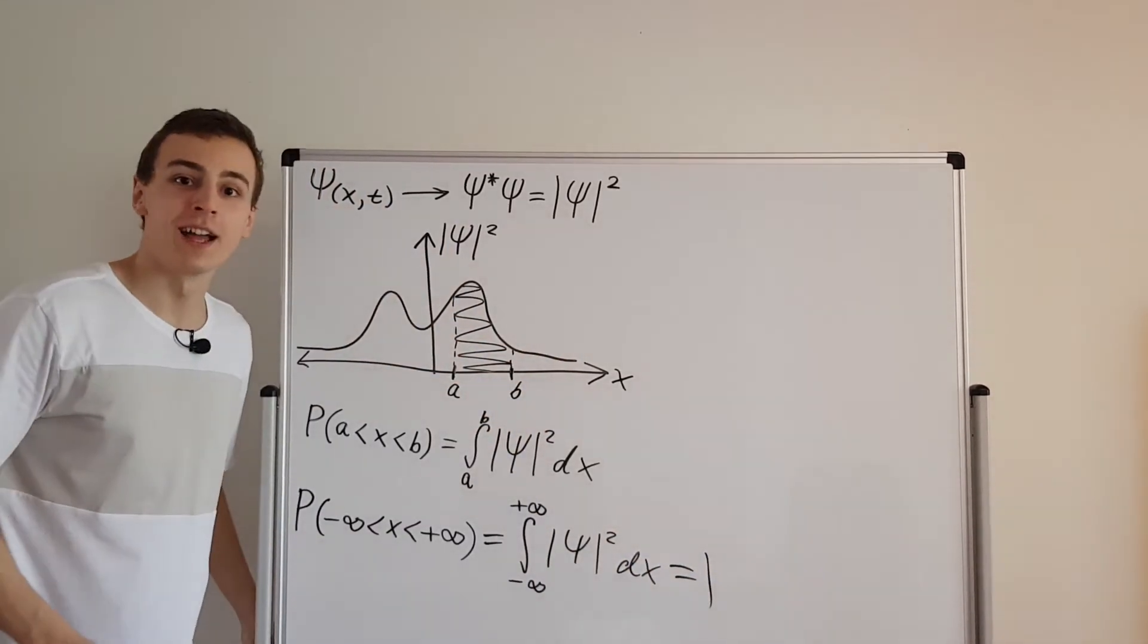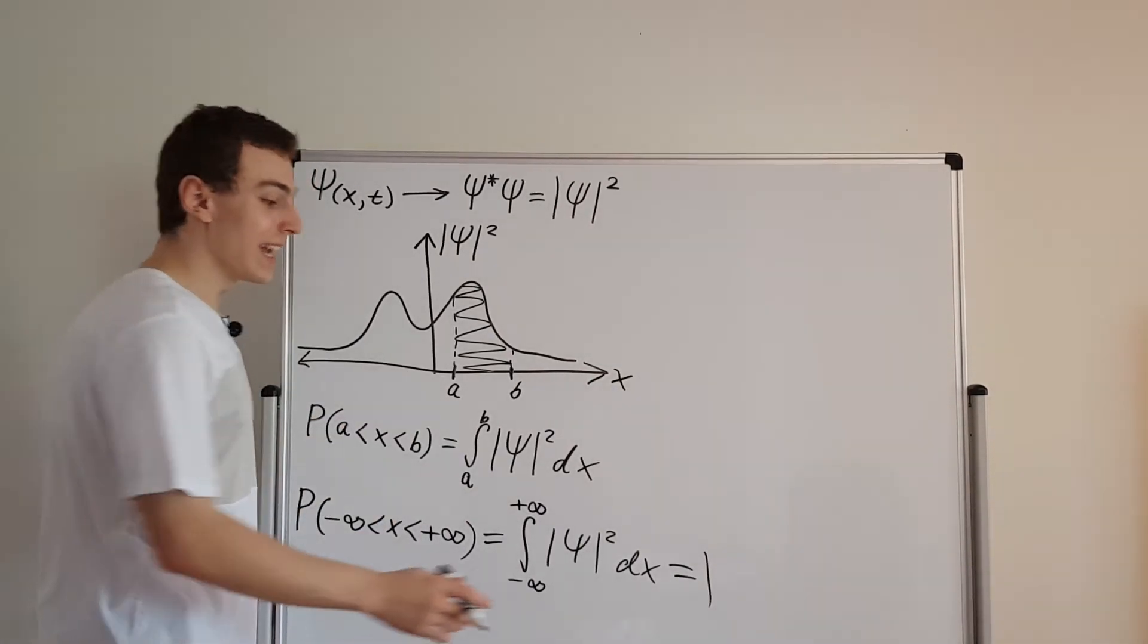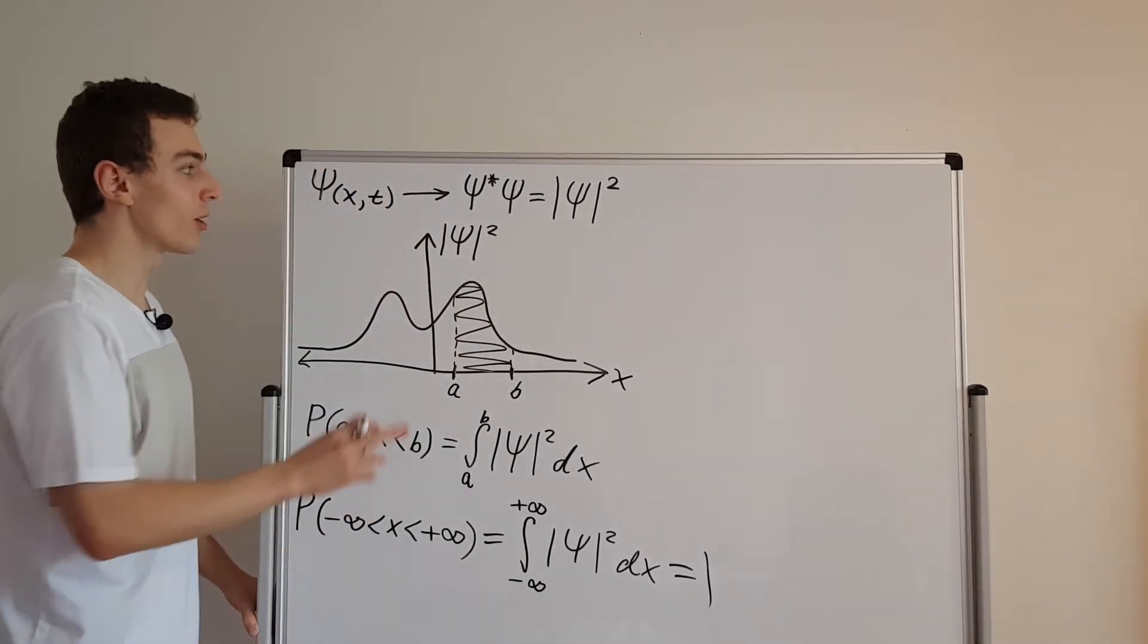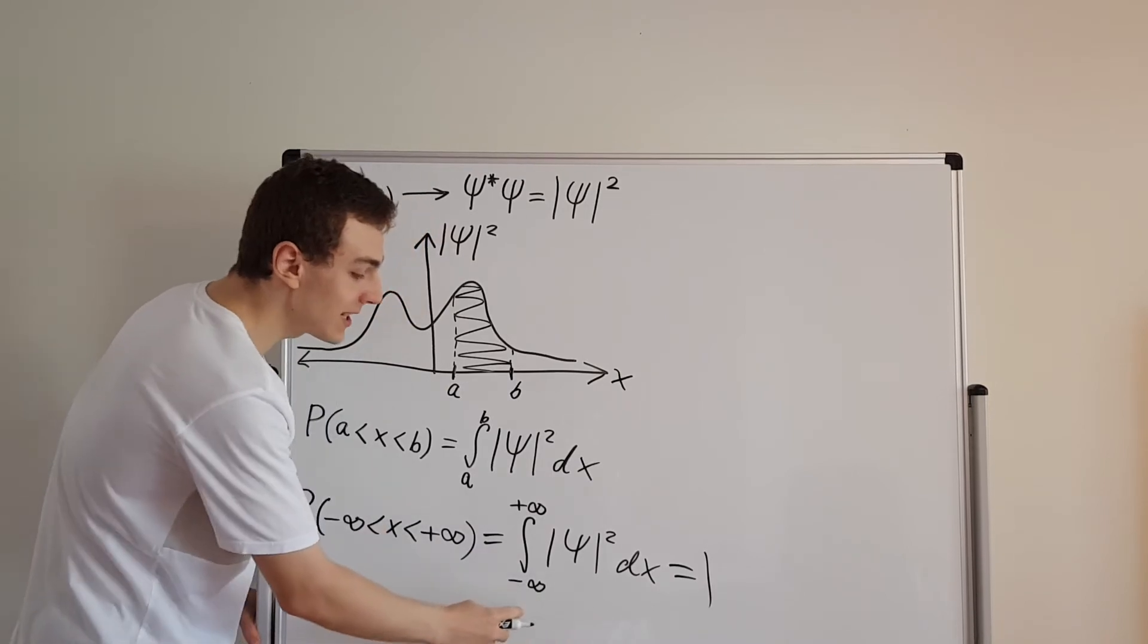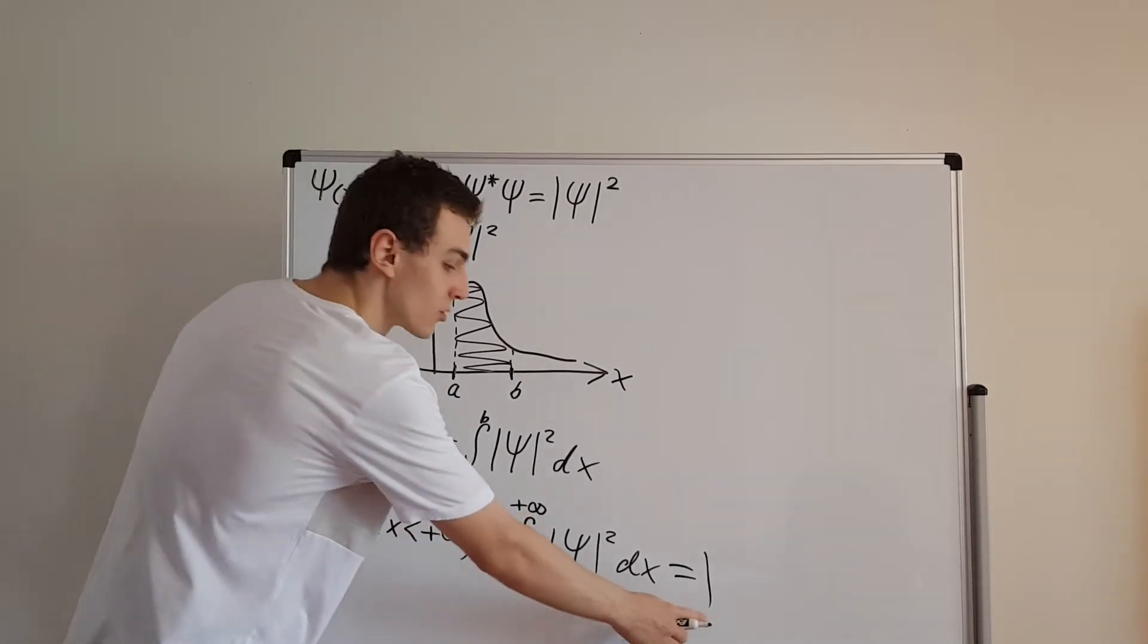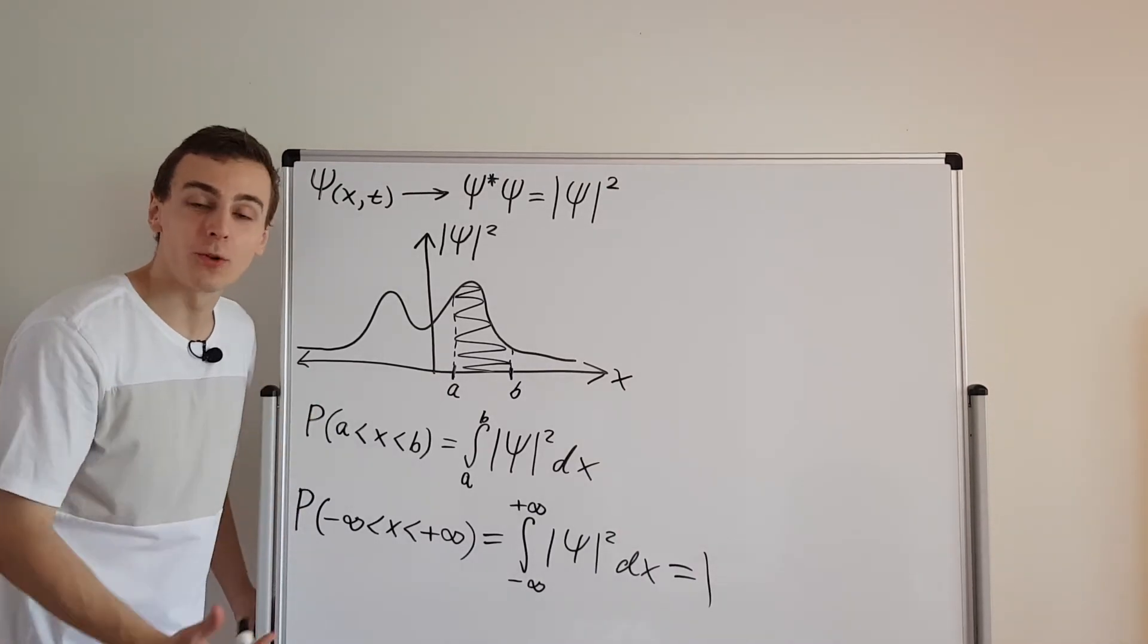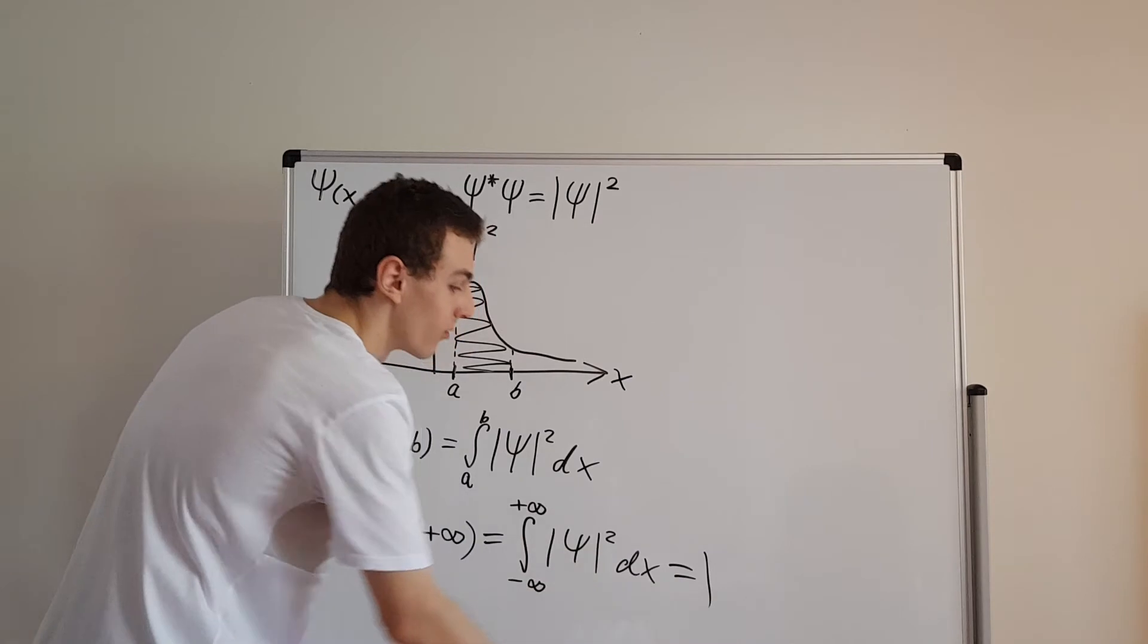So this actually has to be one. This value is one, and that is normalization. If the wave function is normalized, it's going to give a value of one. So we have to define our wave function carefully so that this integral from minus infinity to plus infinity gives us one. Or in other words, this has to be a square integrable function which when integrated gives us the value of one.